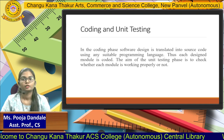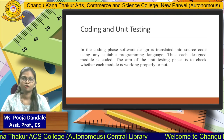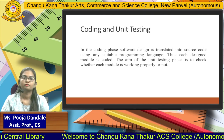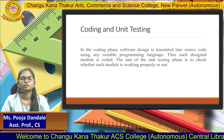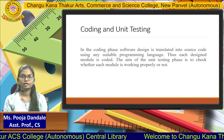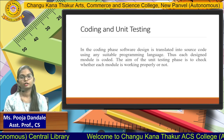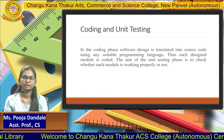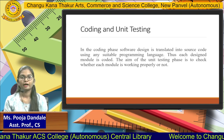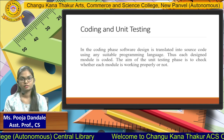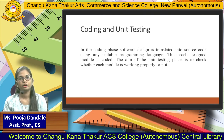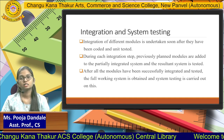Once we have designed all the modules, we select a programming language of our choice — for example Java or Python — and build the product. As we build the product, we also test it. For instance, a phone number field should only accept digits, and a name field should only accept characters. We do unit testing module by module, making sure that after coding each module, we test them individually.